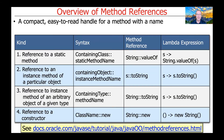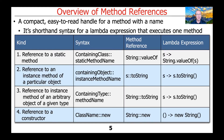A method reference is a compact, easy-to-read handle for a method that already has a name. You can think of it as basically shorthand syntax for a Lambda expression that executes one method. There are four different types of method references. We'll take a look at each of them in turn, and then we'll walk through some examples.